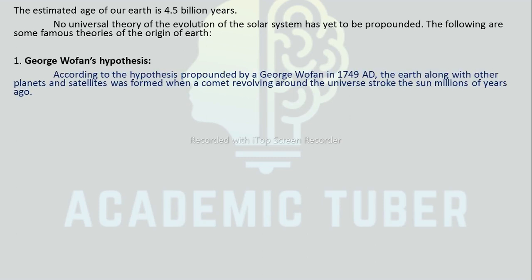The first one is George Buffon's hypothesis, which is also known as the Planetesimal Hypothesis. This hypothesis was put forward by a French scientist George Buffon in 1749. According to this hypothesis, the Earth along with all the planets and satellites was formed when a comet revolving around the Sun collided with it, and the materials got separated from the Sun in thread-like arms. The material cooled and formed solid particles, from which planets along with Earth were formed.